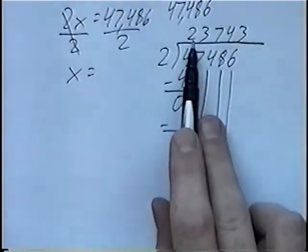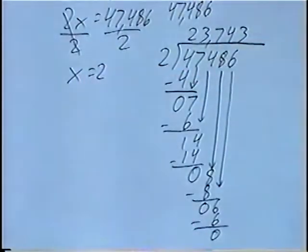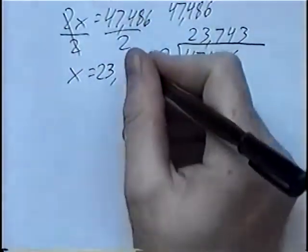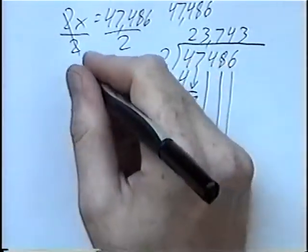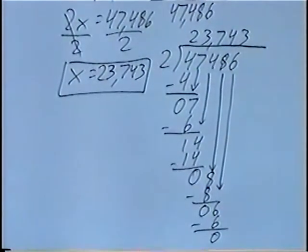So the answer, 23,743, is what x is equal to. 23,743. The amount of books that the library started with.